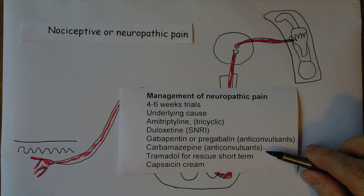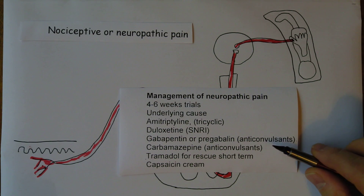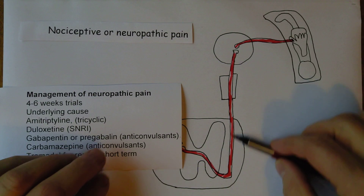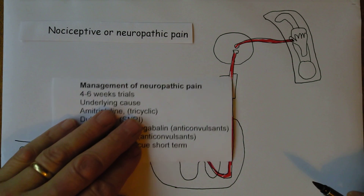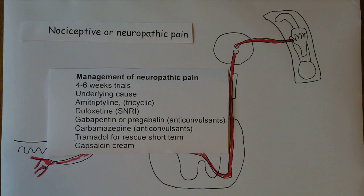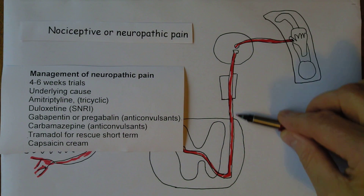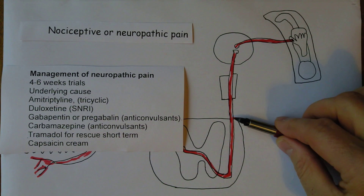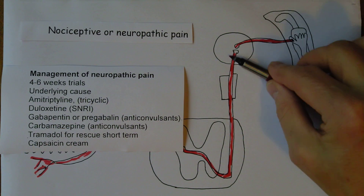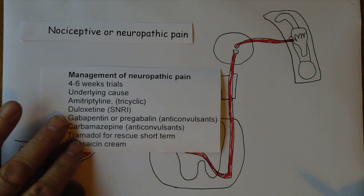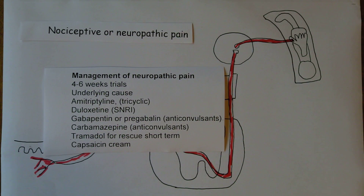Carbamazepine is another anticonvulsant that works differently — it stabilises the nerve fibres by working on the sodium channels, as well as working on the synapses. If fibres in the spinal cord are generating nerve impulses when they're not supposed to, those will go up to the thalamus and be interpreted as pain. Stabilising these nerve fibres can be very effective. Carbamazepine is particularly useful in trigeminal neuralgia, which is transmitted to the brain via the trigeminal nerve — one of the cranial nerves.